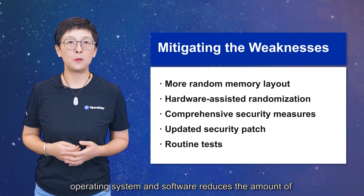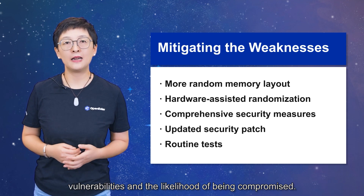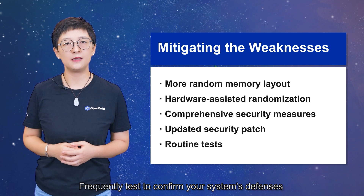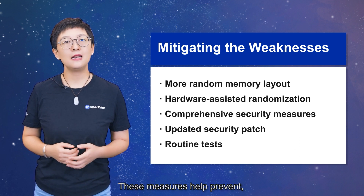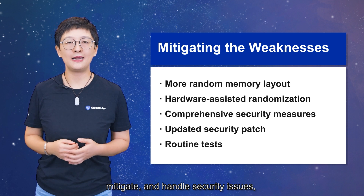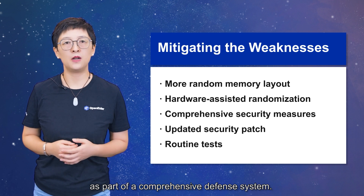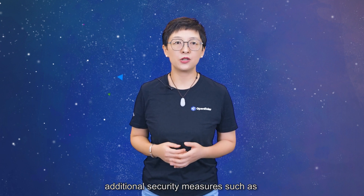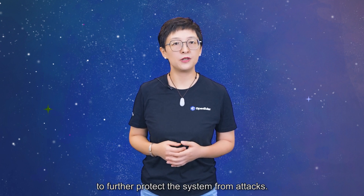Updated security patches for the operating system and software reduce the number of vulnerabilities and the likelihood of being compromised. Frequently test to confirm your system's defenses and resolve any potential weaknesses before they cause issues. These measures help prevent, mitigate, and handle security issues, and system security can be improved as part of a comprehensive defense strategy. Modern operating systems now also employ additional security measures such as control flow integrity and binary hardening to further protect the system from attacks.